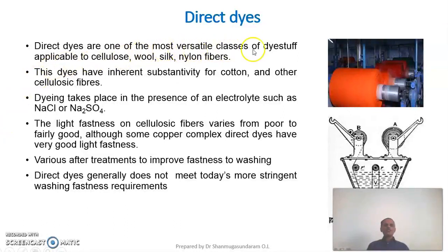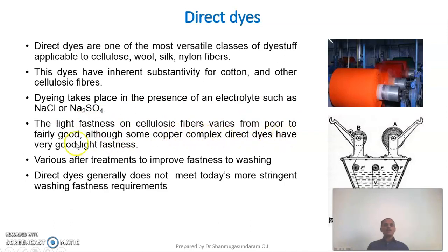Direct dyes are one of the most versatile class of dyestuffs, applicable to cellulose, wool, silk, and nylon fibres. This dye has inherent substantivity for cotton and other cellulosic fibres. Dyeing takes place in the presence of an electrolyte such as sodium chloride and sodium sulphate. The light fastness of direct dyes materials is poor to fairly good, although some copper complex direct dyes have very good light fastness.